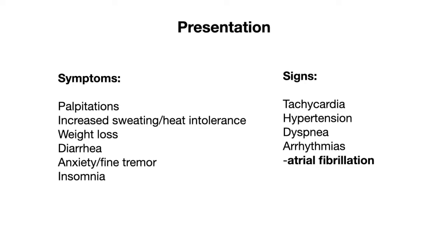Signs of Graves' disease include tachycardia, hypertension, dyspnea, and arrhythmias, most notably atrial fibrillation. To help you remember these signs and symptoms, it's good to know that hyperthyroidism is associated with an increased number of beta adrenergic receptors, and so you get an enhanced sympathetic response, which can explain many of these findings.